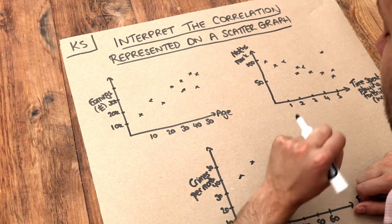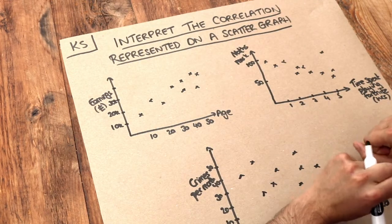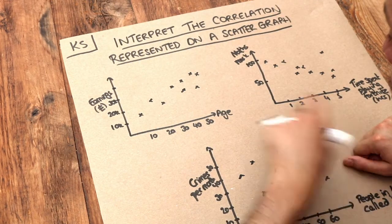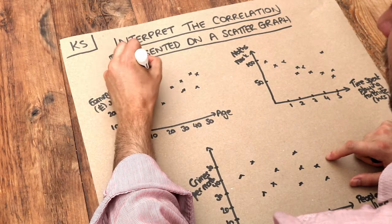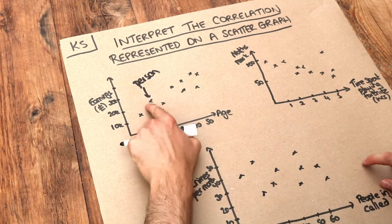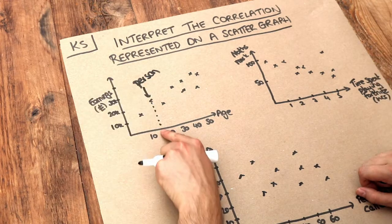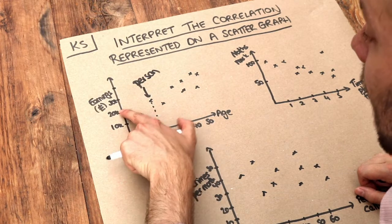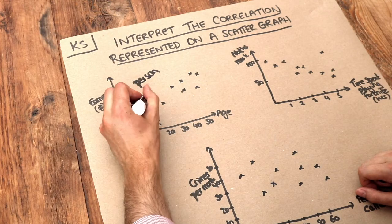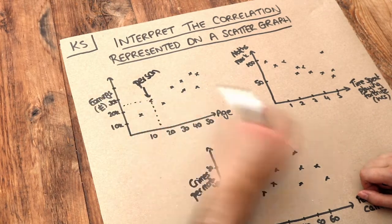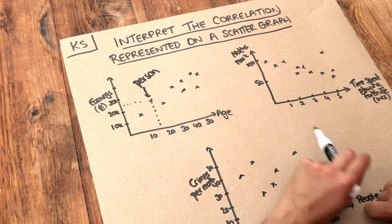A scattergraph is useful for plotting data when each piece of data has two values associated with it. For example, each of these crosses represents a person, and there are two values associated with each person. We've got their age, so this person is around 17 years old, and their annual earnings, in this case about £25,000. So each point represents a person with two values: age and earnings.